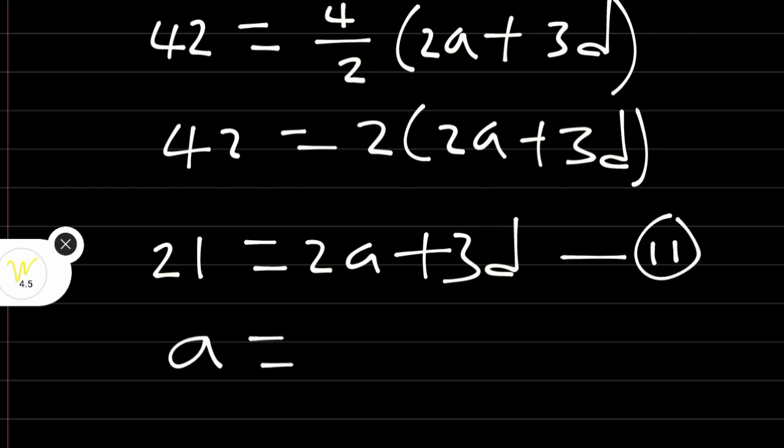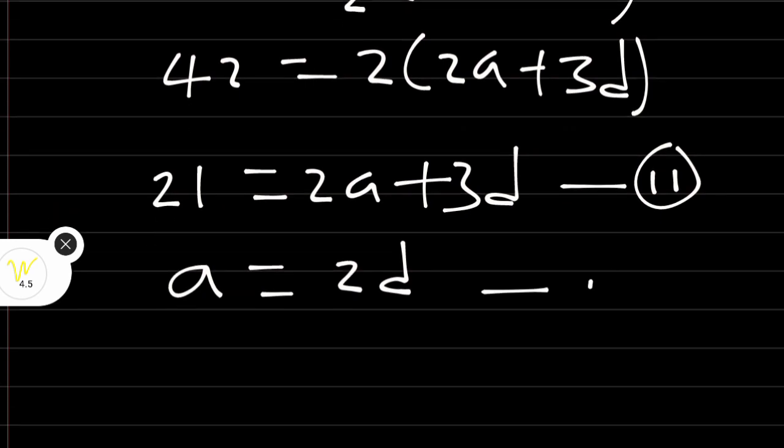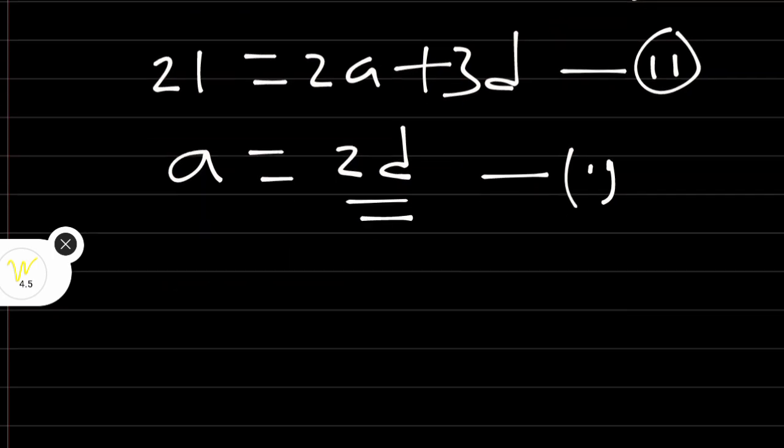Our equation 1 says that A is equal to 2D. Anywhere we see A in this second equation, we are going to substitute A equals 2D. Or we replace A by what? 2D. Therefore, we have 21 is equal to 2 into bracket A. Instead of A, we are going to write 2D then plus 3D.